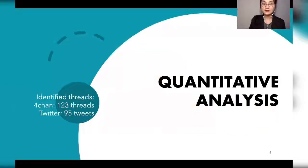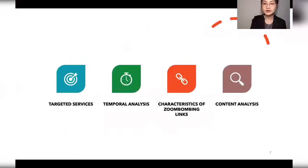Finally, we identified 123 4chan threads discussing such attacks, as well as 95 tweets, and analyzed them using quantitative and qualitative analysis. We provide analysis across four aspects: which services are targeted the most, how Zoom Bombing unfolds temporally, what are the characteristics of Zoom Bombing links, and we use natural language processing techniques to quantify the content of Zoom Bombing threads.